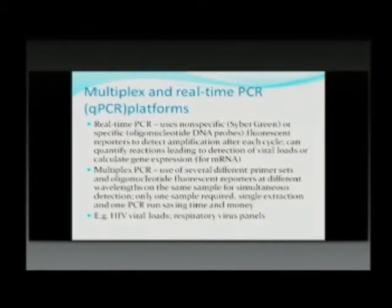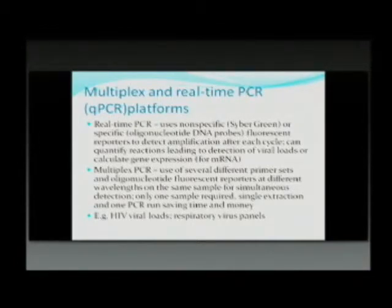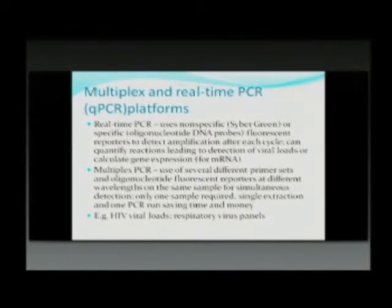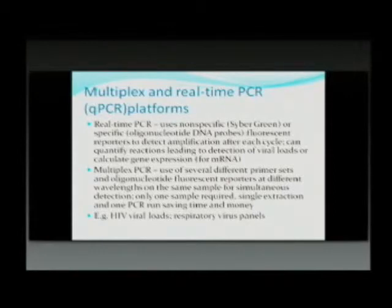Multiplex PCR uses different kinds of primer sets. Instead of just one fluorophore, you can use multiple sets to detect several organisms from one sample. You only have to extract the DNA once — as opposed to having five different reaction tubes, you only have one reaction tube detecting several organisms off just one sample. For real-time PCR, you typically see it used with HIV viral loads. For multiplex PCR, you have respiratory virus panels.